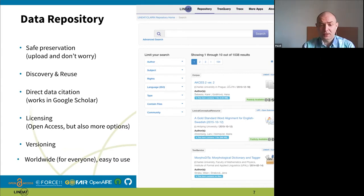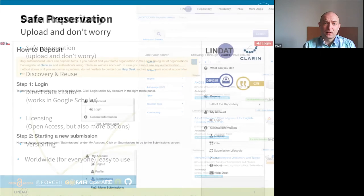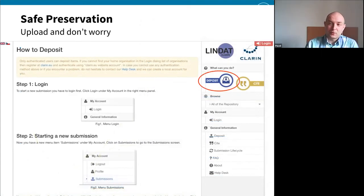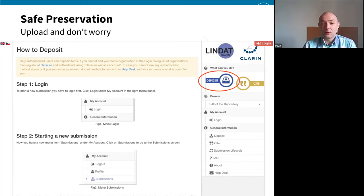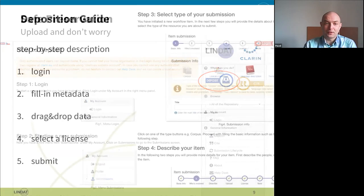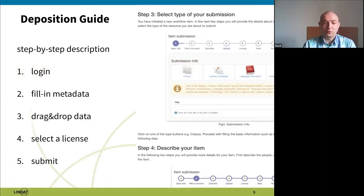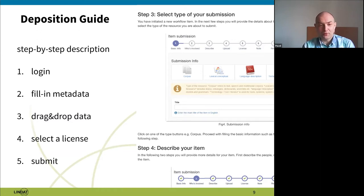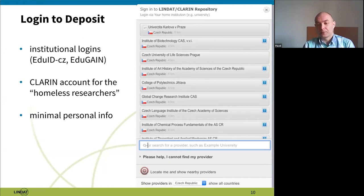For preservation, you click the deposit button and get a guideline on how to deposit. You log in, start a new submission, fill in a few metadata fields in a web form, drag and drop a dataset, select a license, review what you've filled in, and click submit. It then goes to a reviewer, and when the reviewer verifies everything looks correct, the data is published.